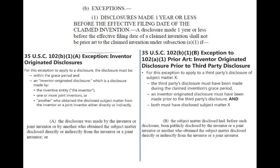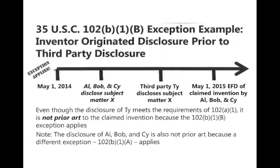Let's look at some timelines. The inventors disclose — then some third party discloses. Since the inventors disclosed in their grace period, no problem. These guys obviously took it from them, so we can knock out both disclosures as prior art. But let's say the inventors disclosed before the grace period — and Ty took it from the inventor, but Ty disclosed it during the grace period. The examiner cannot use what Ty disclosed — that's exempted — because the inventors disclosed it first.